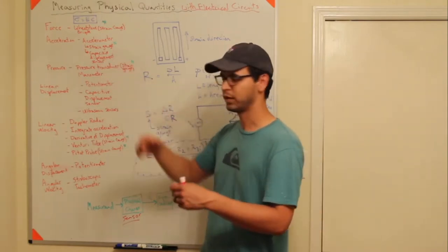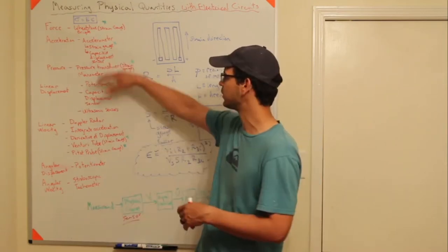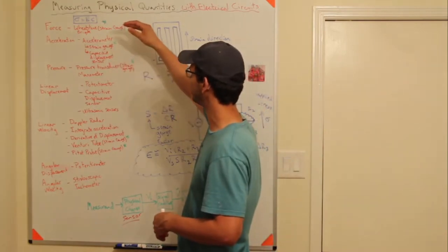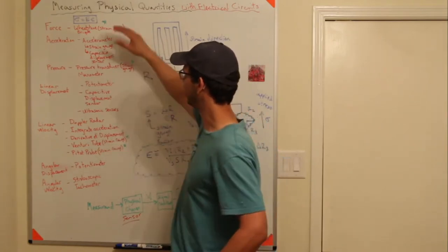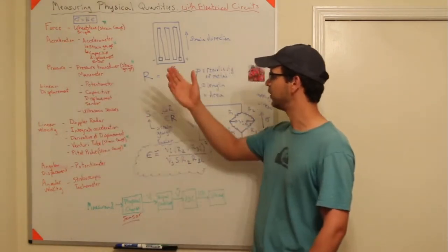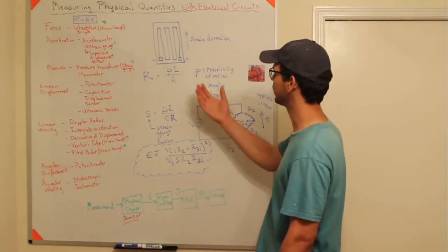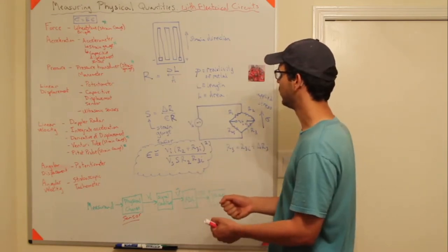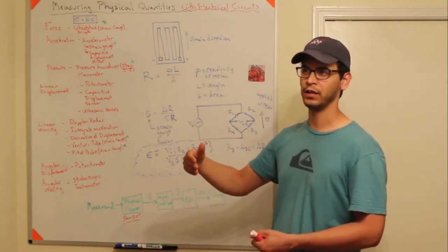You can combine strain gauges with other things — like accelerometers, you can have a pendulum that swings. Strain gauges can be used in multiple different places. The strain gauge by itself doesn't measure a physical quantity other than strain. In order to get force, you have to measure strain and then multiply by E, Young's modulus, to get stress — and stress is force divided by area.